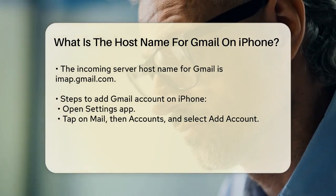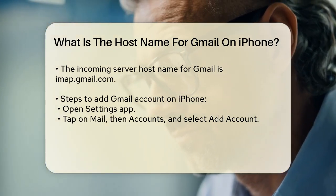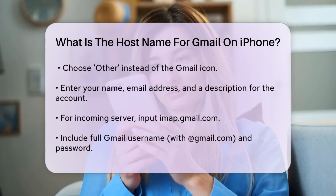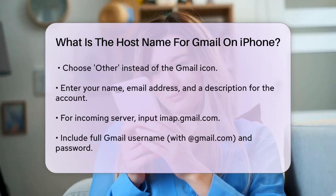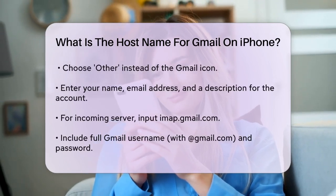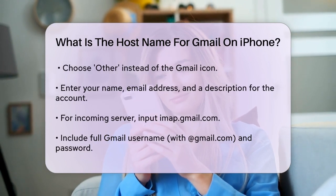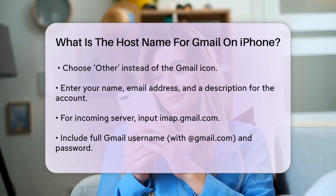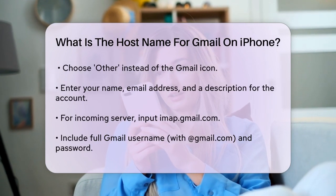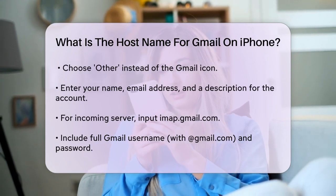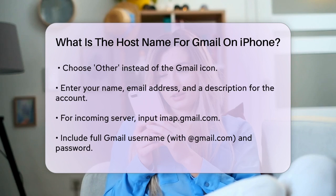Choose Other instead of selecting Gmail directly, because the Gmail icon might still be set to the older POP feature by default. Enter your name, email address, and a description for your mail account. For the incoming server host name, type in imap.gmail.com. Make sure to include your full Gmail username, including @gmail.com, and your password.